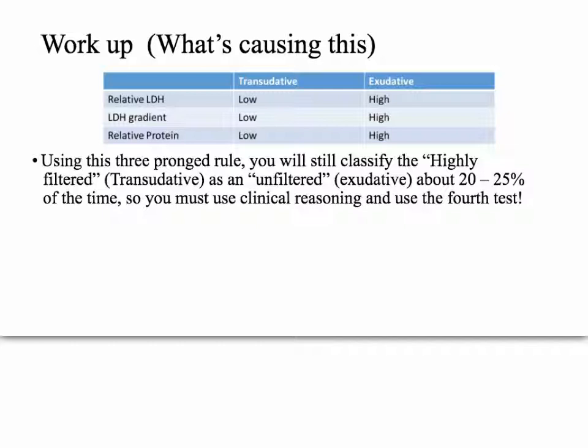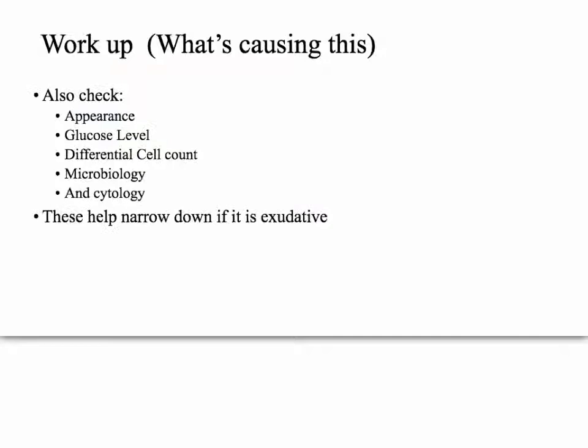About 20% to 25% of the time, even when it's truly been filtered properly, this three-pronged test will misclassify transudative as exudative. That's why it's important to keep in mind that fourth test — the protein gradient from the serum. If the protein gradient is greater than 3.1 grams per deciliter, then it's transudative.